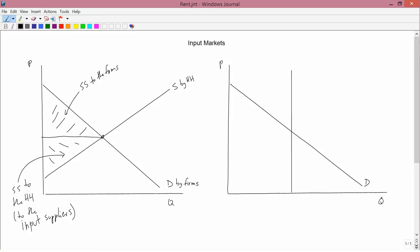Now, it turns out we have a special name for this idea of the social surplus to the input suppliers. By the way, I'm drawing the demand and supply curves here as straight lines, but they don't have to be straight at all. They can have any kind of curve that you want.